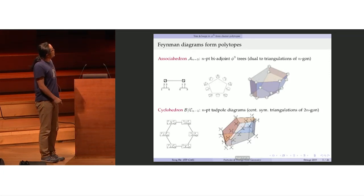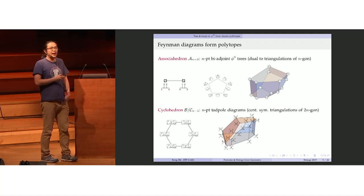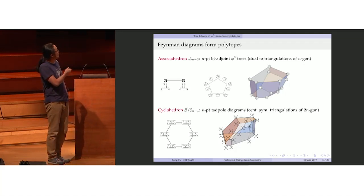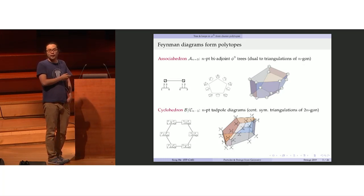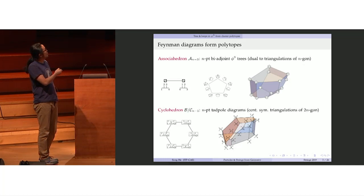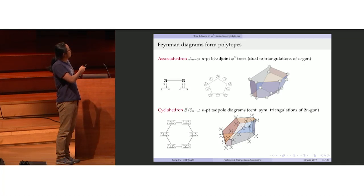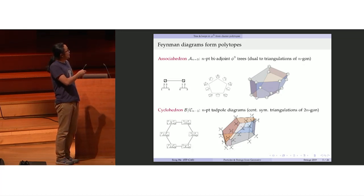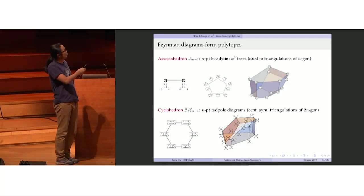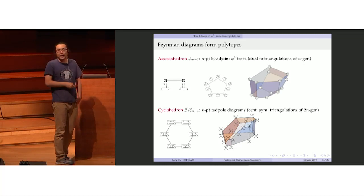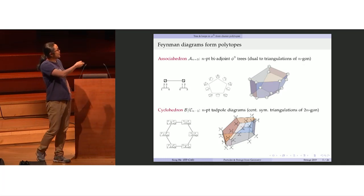There is a very basic but non-trivial observation about planar Feynman diagrams, especially planar cubic Feynman diagrams: they form polytopes. The most well-known example is probably the associahedron of n-3 dimension, which describes all the cubic planar trees of n-point. These cubic trees sit at the vertices of this polytope. For four points, you have S and T channel at the two endpoints of the one-dimensional associahedron. The five cubic trees form a pentagon for the two-dimensional associahedron, where each edge connects two cubic trees that differ by one propagator or one mutation.